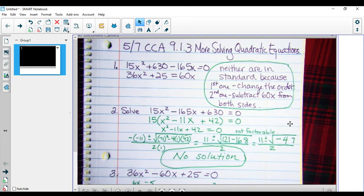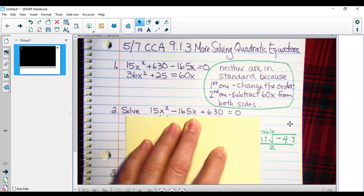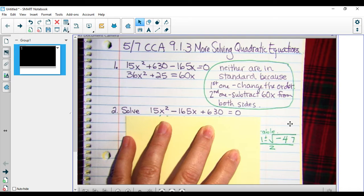Then we're going to go ahead and solve each of those once we've done that. First one, we have our standard form now. I moved the negative 165x in between the constant and the x squared. I'm going to factor out a common factor first, which is 15, and that leaves me with 15 times the quantity x squared minus 11x plus 42.